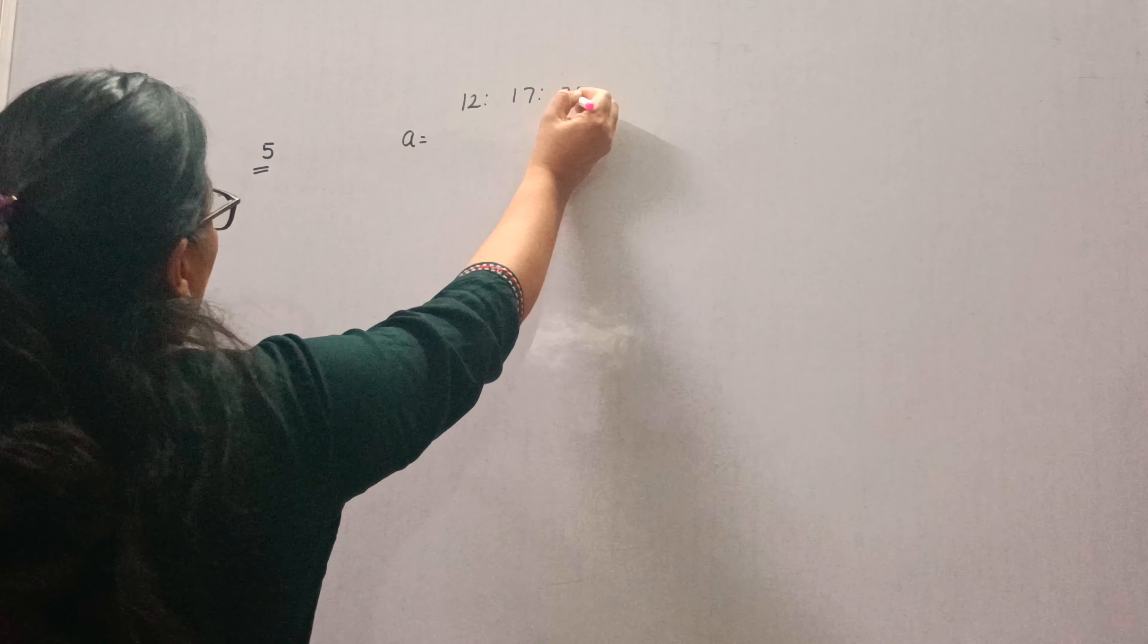Find its area. So the ratio of the sides is given and perimeter is 540 cm, and we want to find the area.